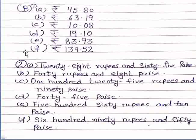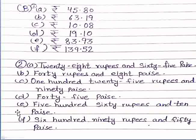Now comes question number two: see in your book — write the following amount in words. Part a: rupees 28.65 — hum words mein likhenge: 28 rupees and 65 paise. Dot ke place par 'and' use karenge, aur dot ke baad paise hote hain. Part b: rupees 40.08 — hum likhenge: 40 rupees and 8 paise. Similarly you have to write all questions.